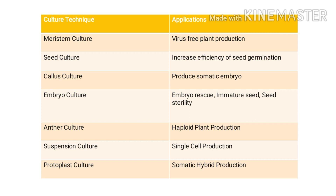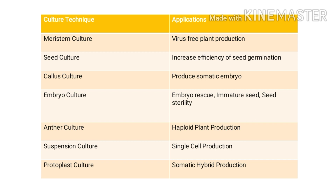Callus culture is useful for the production of somatic embryoids. The plant forms a callus, and from that callus, somatic embryoids can be produced. In callus culture, you can produce plants in a totipotent manner for the production of somatic embryos. In one line, the key application of callus culture is somatic embryoid production.